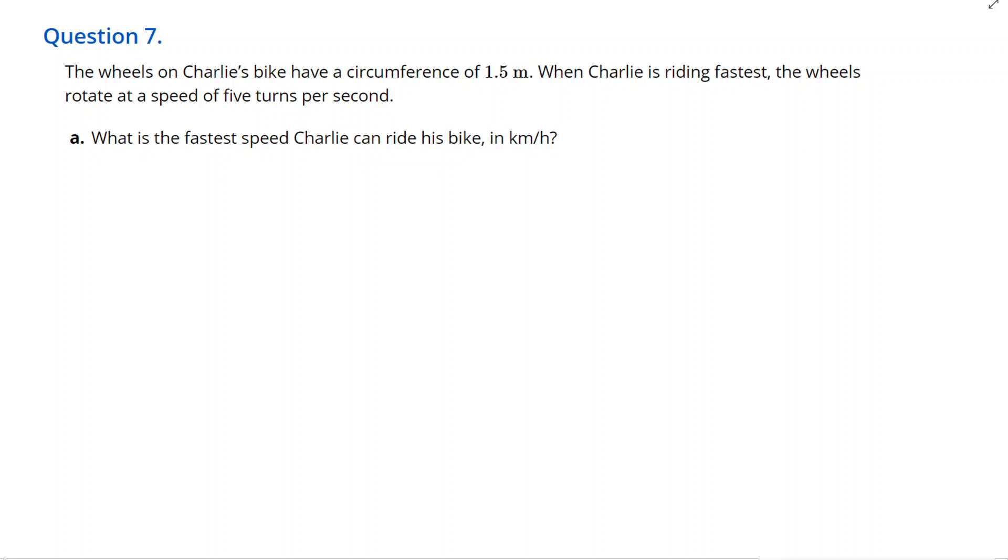Hello, so we are going to go through question seven here. It says the wheels on Charlie's bike have a circumference of 1.5 meters. When Charlie is riding fastest, the wheels rotate at a speed of five turns per second. What is the fastest speed Charlie can ride his bike in kilometers per hour?